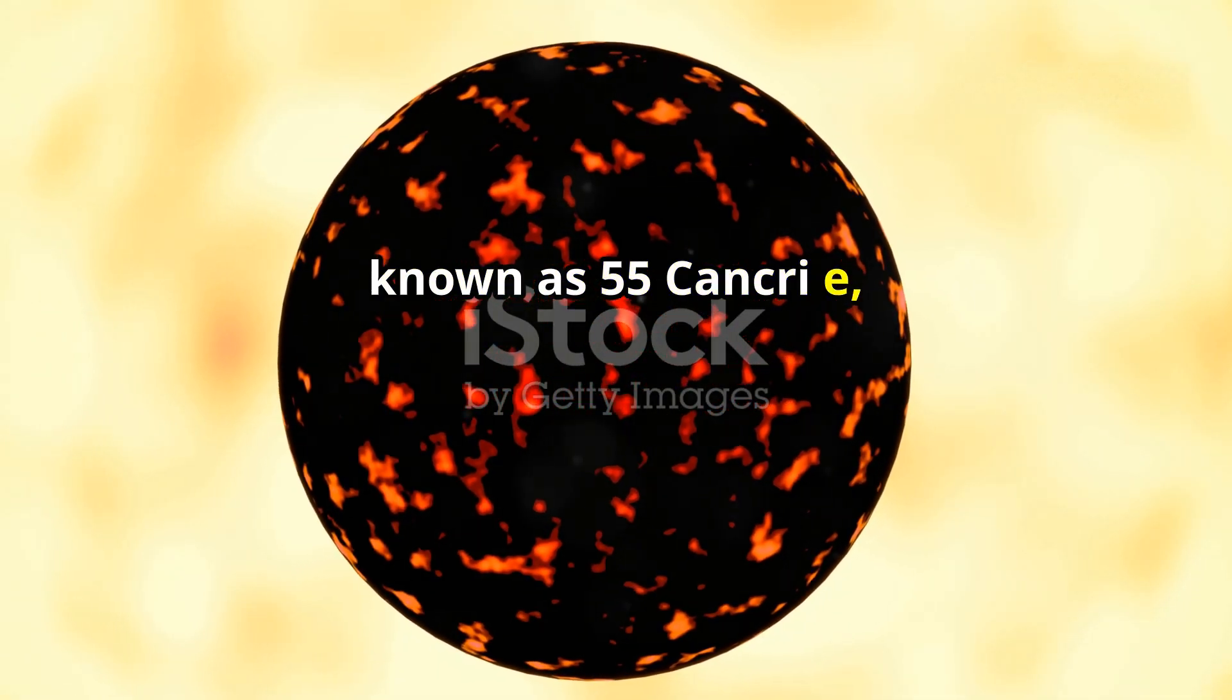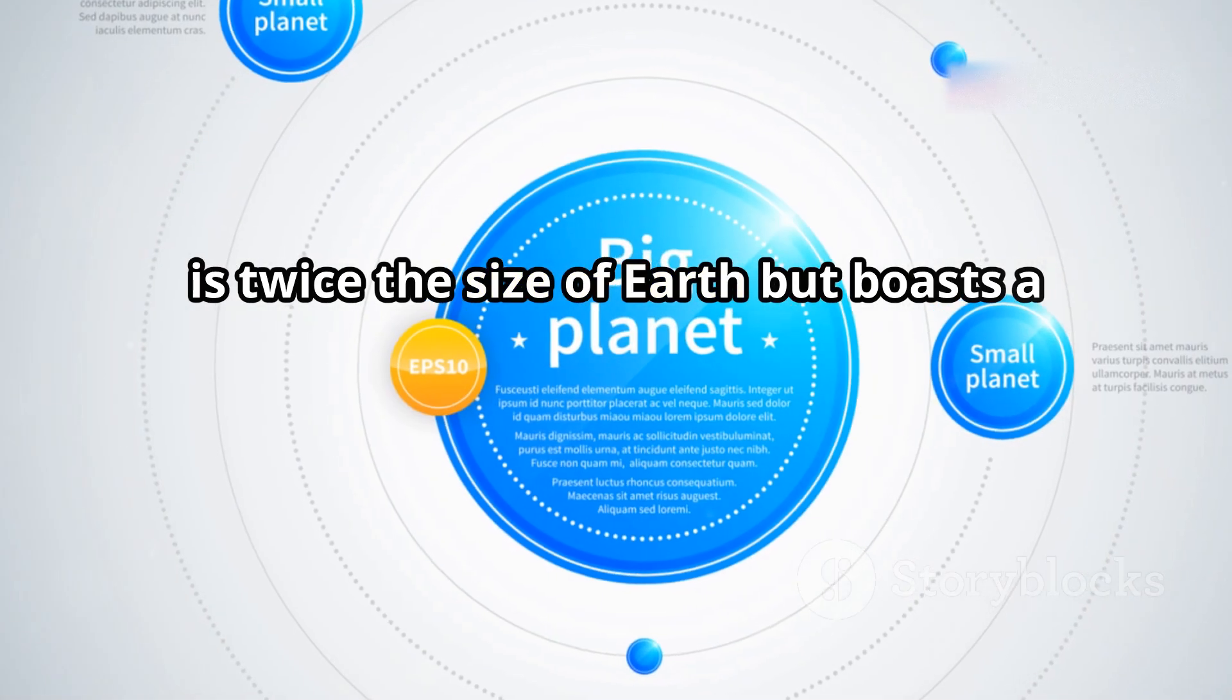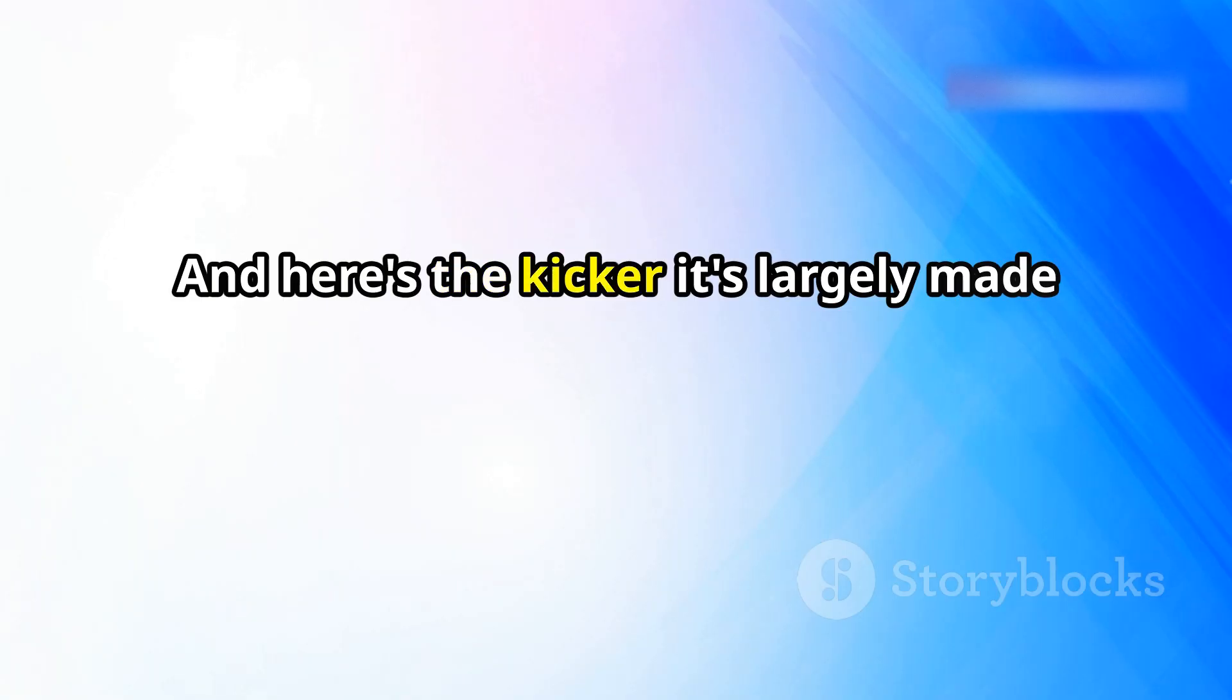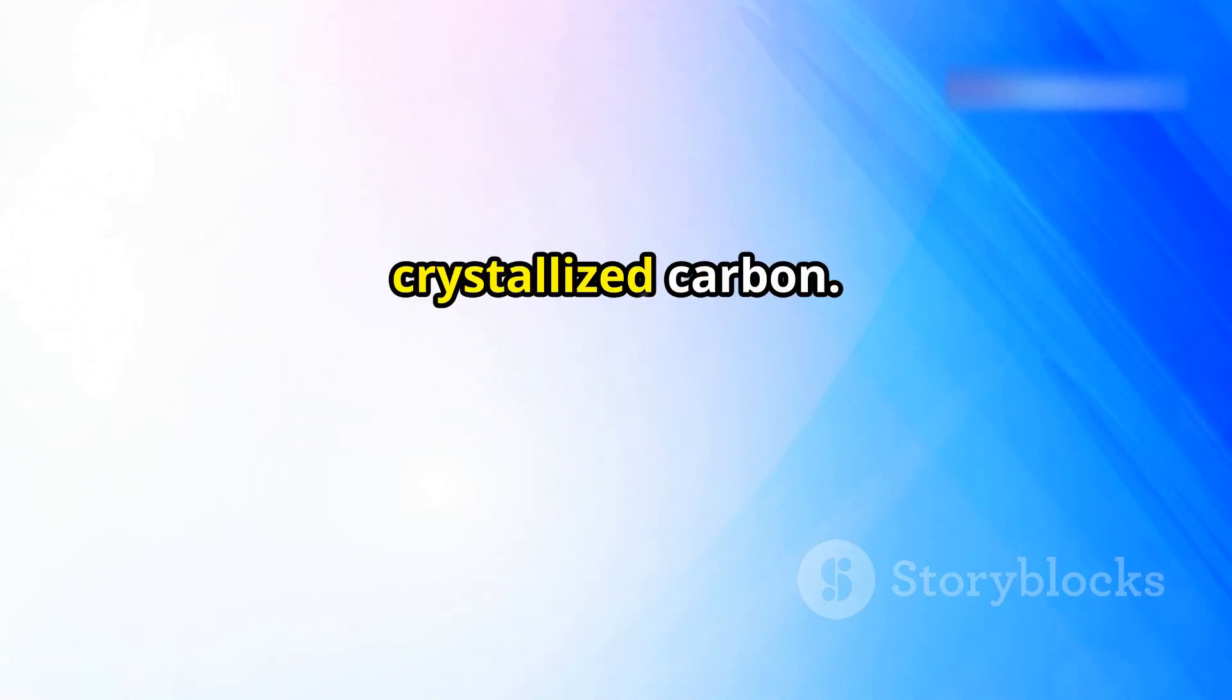This celestial body, known as 55 Cancri E, is twice the size of Earth but boasts a mass eight times greater. And here's the kicker: it's largely made of pure, crystallized carbon.